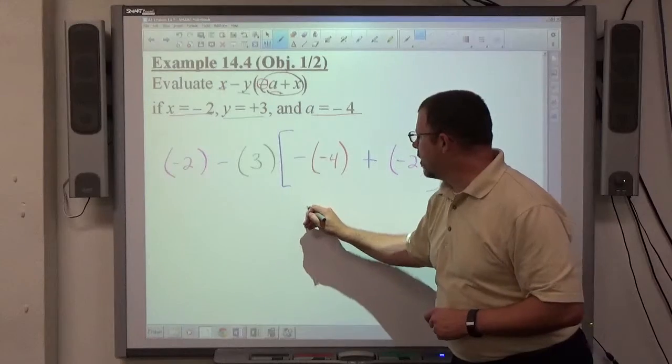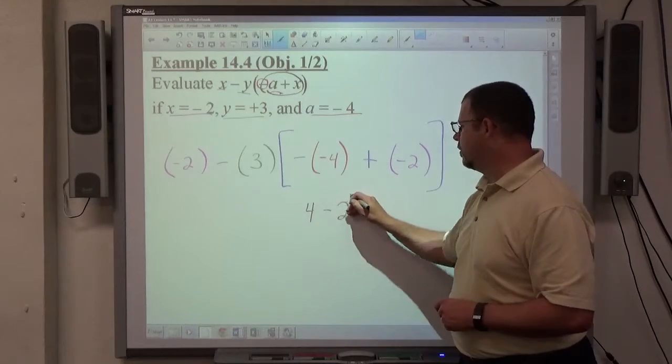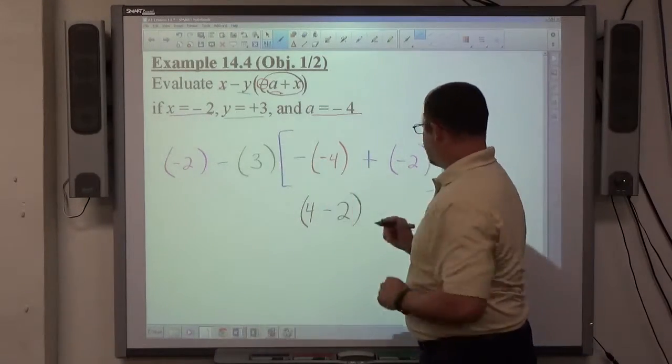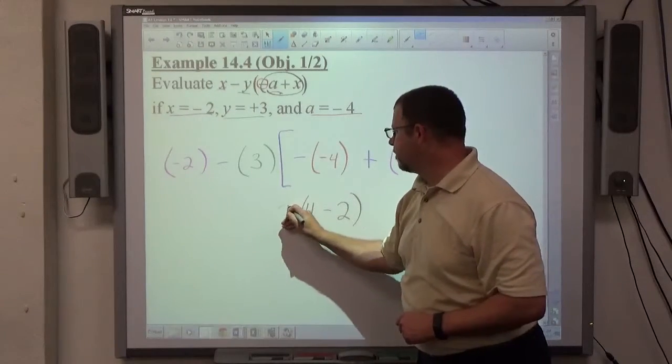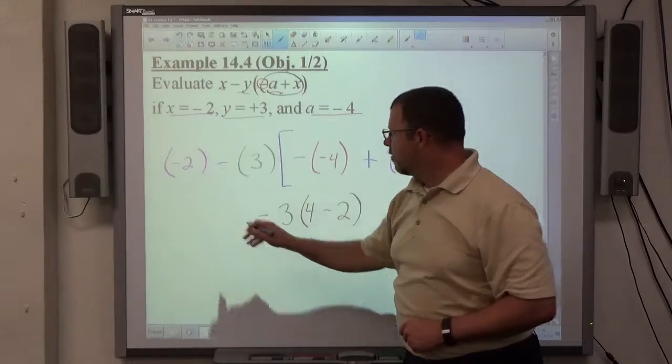Minus minus 4 means positive 4. Plus minus 2 means minus 2. That's the group that's being multiplied by a 3 that's being subtracted from a negative 2.